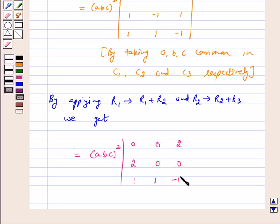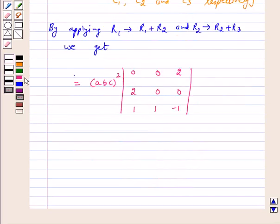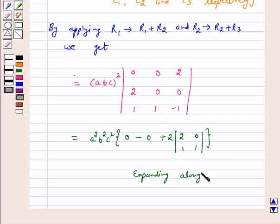times the determinant 0, 0, 2; 2, 1, 0; 1, 1, minus 1, which equals 0 minus 0 plus 2 into 2 times 1, 0, 1 by expanding along first row.